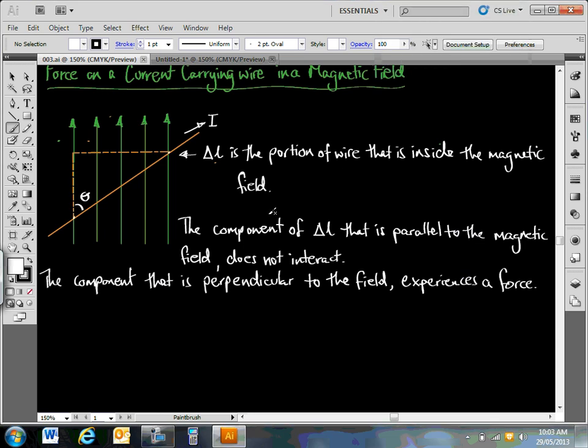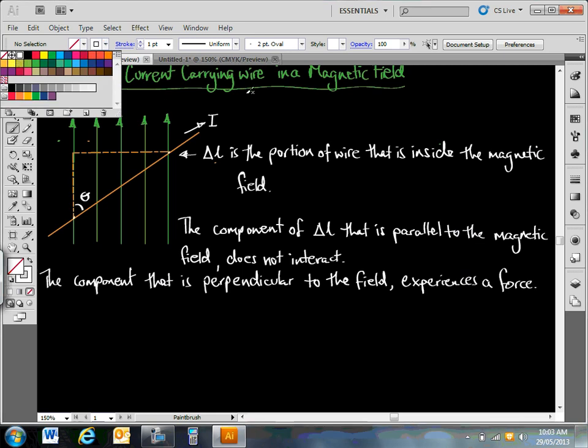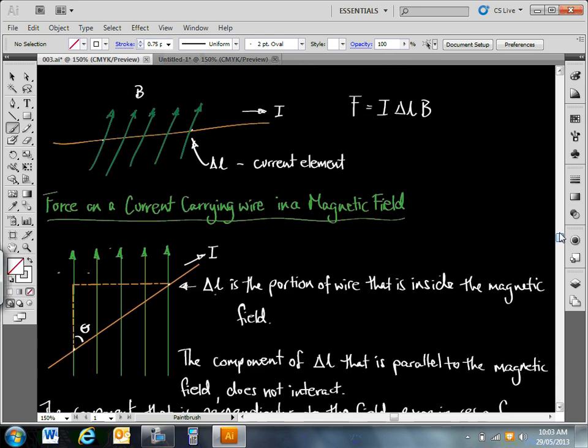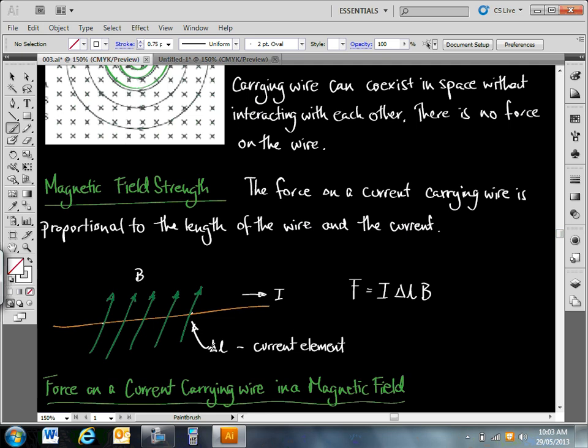The force on this wire. Now, I made a mistake in the last lesson, which was that the current element is in fact, where did I say it though? Current element, current element here, delta L multiplied by the current. Delta LI is the current element, not just delta L. Delta L is the length of the wire that belongs to that magnetic field or sits inside that magnetic field. In order to find the current, what we call the current element, I need to multiply delta L by the current itself.